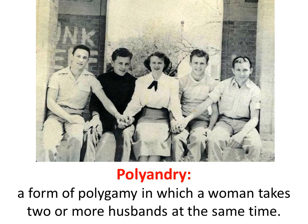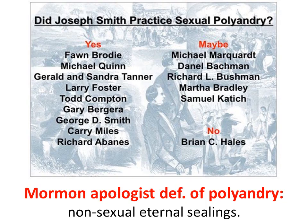Polyandry — a form of polygamy in which a woman takes two or more husbands at the same time. But since Joseph Smith took other men's wives, Mormon apologists have redefined the term 'polyandry' to simply mean non-sexual eternal sealings. So they've redefined the term 'wife,' redefined the term 'marriage,' redefined the term 'polyandry' — no sex was going on. Did Joseph Smith practice sexual polyandry? Many say yes, some say maybe, and some say no.